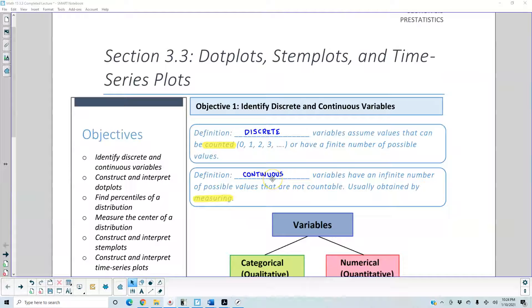Definition: Continuous variables have an infinite number of possible values that are not countable, usually obtained by measuring.